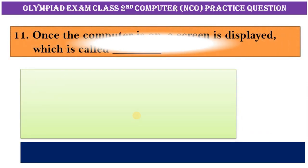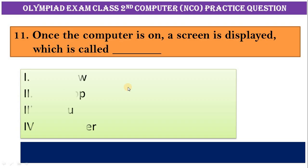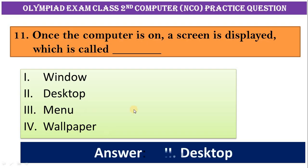Number eleven: once the computer is on, a screen is displayed which is called one, window. Second, desktop. Third, menu. Fourth, wallpaper. Correct answer is option second, desktop.